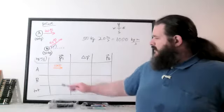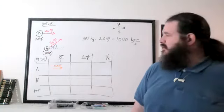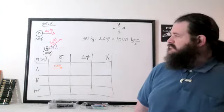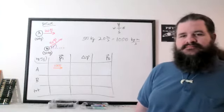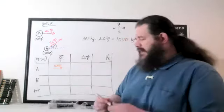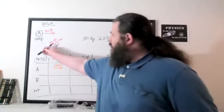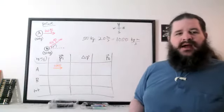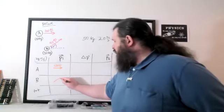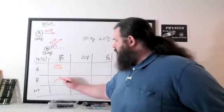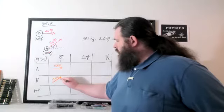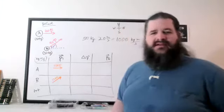For object B, the initial momentum is 30 kilograms times 40 meters per second, which is 1200 kilogram meters per second. That'll be in the direction B is traveling, since momentum is always in the direction of velocity — mass is just a scalar multiplier. So 1200 in that direction, drawn as an arrow slightly longer than A's since it's a larger vector.